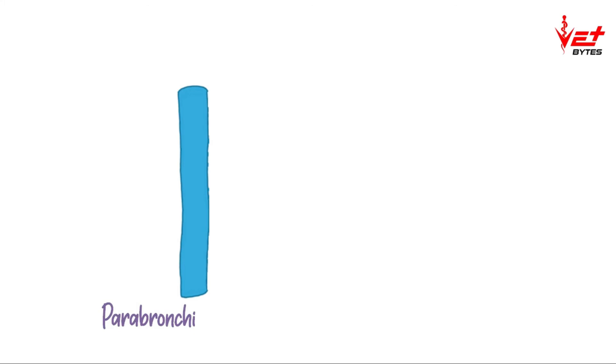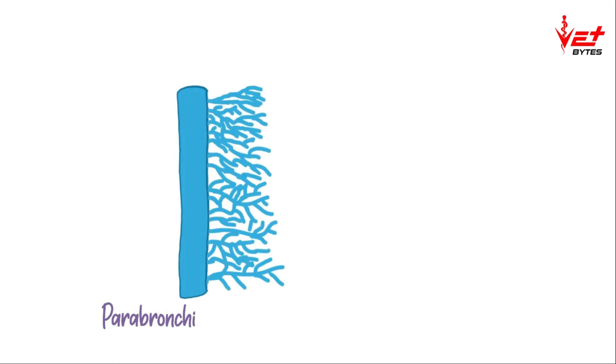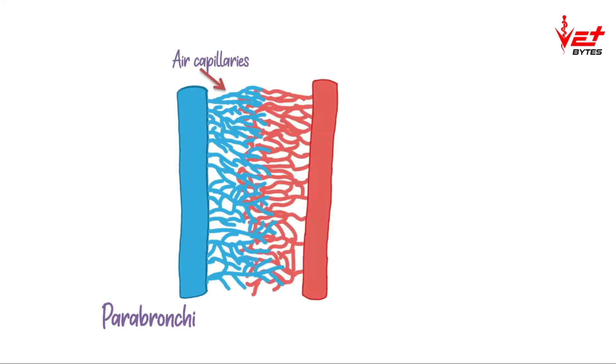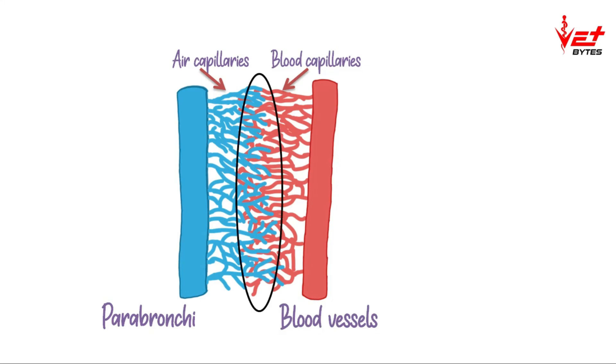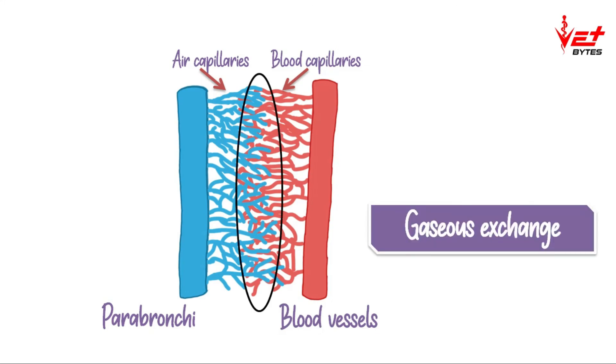Air flows through the parabronchi. Tube-like divisions called air capillaries originate from the parabronchi. These air capillaries are closely associated with the blood capillaries from the blood vessels, and this is the place where actual gaseous exchange takes place in birds. This is how respiration occurs in birds. Thank you for watching — if you find this video informative, kindly share it with your friends.